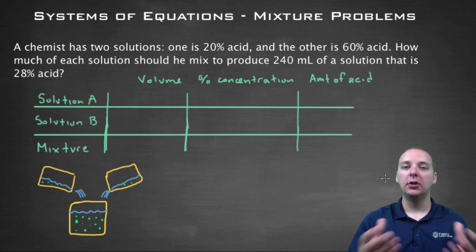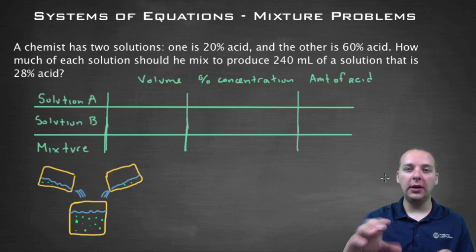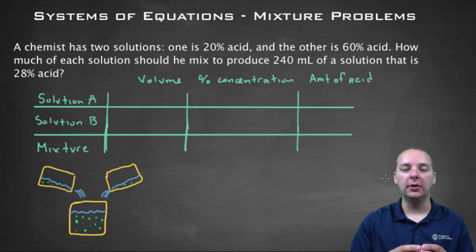A chemist has two solutions. One is 20% acid and the other is more concentrated at 60% acid. How much of each solution should be mixed together to produce 240 milliliters of a solution that's 28% acid, which is somewhere between 20 and 60? So we'll need a little of one and a little of the other, but not just that. We have to actually have just enough to also make it equal 240 total milliliters.